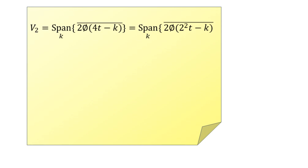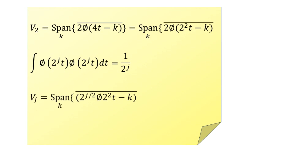Now let us generalize. For the unnormalized bases of Vj with translations, integrating phi(2^j · t) multiplied by phi(2^j · t) over the entire timescale results in 1/(2^j). To obtain a result equal to 1, we select the normalizing constant equal to √(2^j), which can also be written as 2^(j/2). Therefore, Vj in general is defined as span_k { 2^(j/2) · phi(2^j · t − k) }.